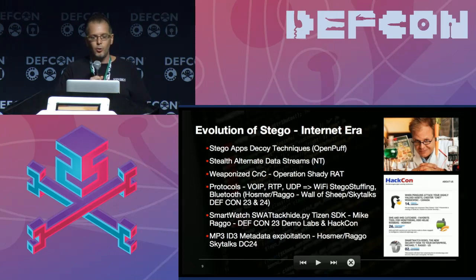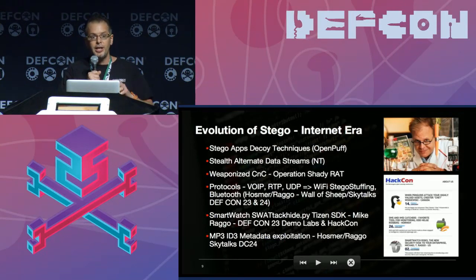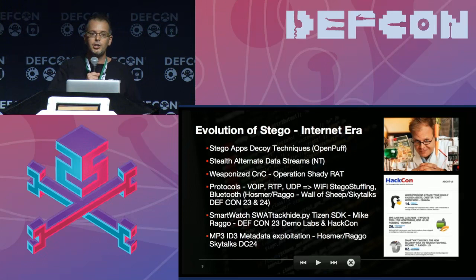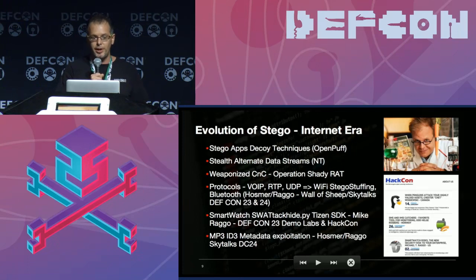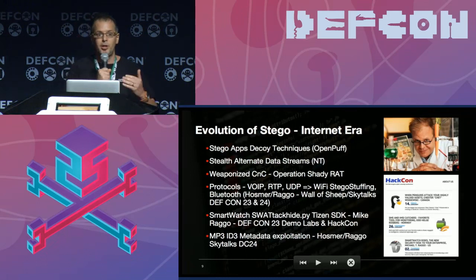A few years back, Operation Shady Rat research was released. One of the ways it operated was a callback to a WordPress site where updated instructions were hidden within an image — parsed, extracted, and used to update command-and-control information. Additionally, there was great SANS research on alternate data streams within Windows NT, allowing for stealth alternate data streams by exploiting built-in OS features like LPT in a much more stealthy manner.